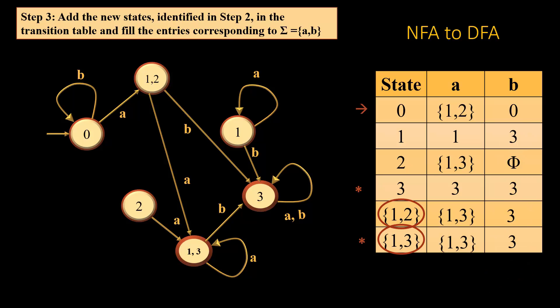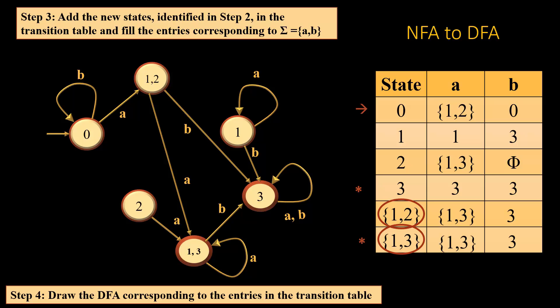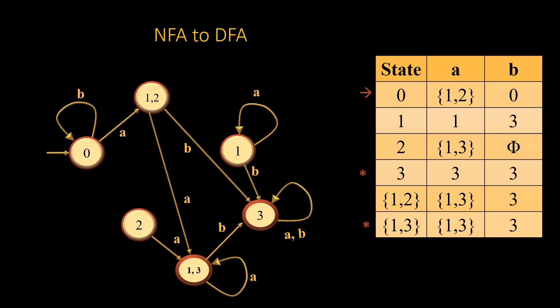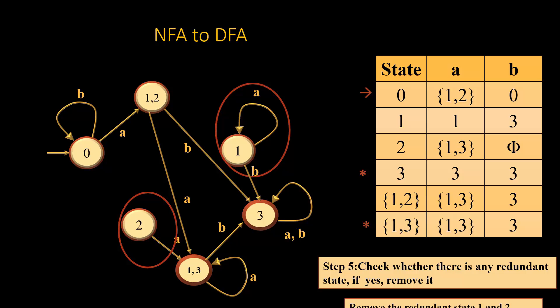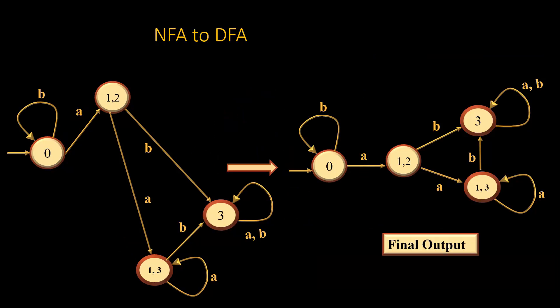We do not have any new states, so we are ready to draw the DFA. We draw the DFA corresponding to the entries in the transition table. Next, we check whether there are any redundant states. In this case it is evident that state 1 and state 2 are both redundant, so we remove them. The final DFA obtained is shown here — this completes the NFA-to-DFA conversion.